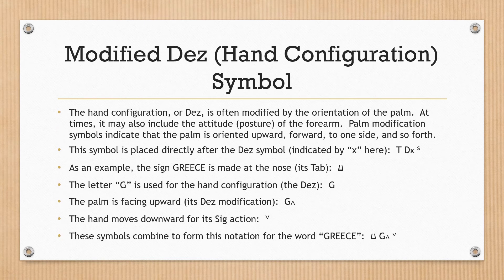Modified DES hand configuration symbol. The hand configuration, or DES, is often modified by the orientation of the palm. At times it may also include the attitude or posture of the forearm. Palm modification symbols indicate that the palm is oriented upward, forward, to one side, and so forth, and are placed directly after the DES symbol. For example, the sign GREASE is made at the nose — its TAB. The letter G is used for the hand configuration DES, capital letter G. The palm is facing upward as its DES modification. The hand moves downward for its SIG action. These symbols combine to form the notation for GREASE.